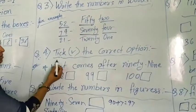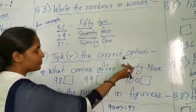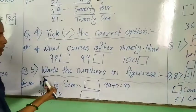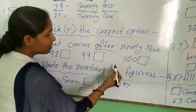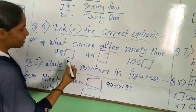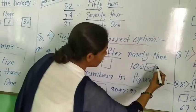Next question. Tick the correct options. What comes after 99? After means comes next. What comes after 99? 100.